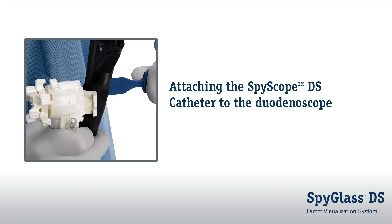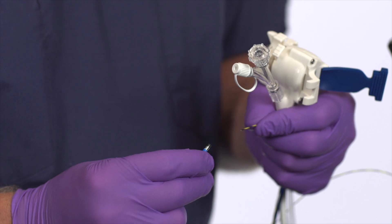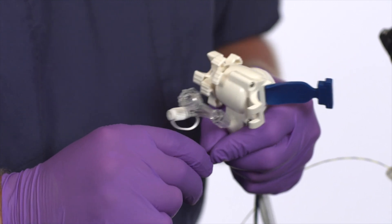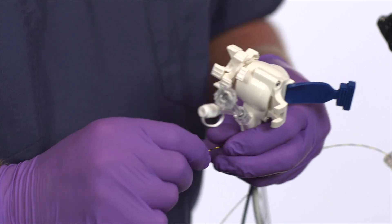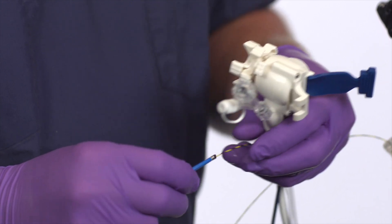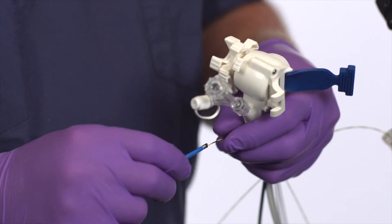Attaching the Spyscope DS catheter to the duodenoscope. When using a guide wire approach, back load the previously cannulated guide wire into the duodenoscope working channel and remove other accessories: tome, cannula, etc.